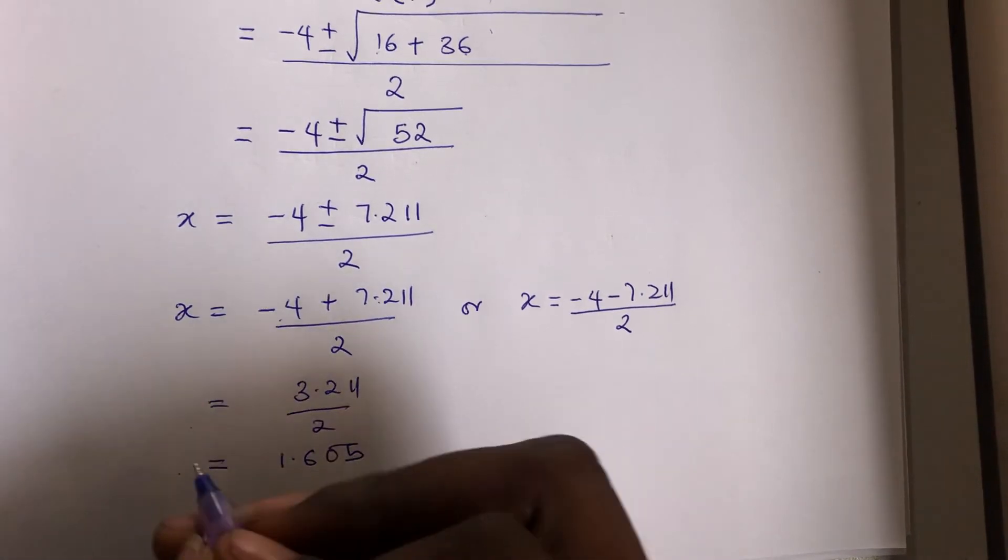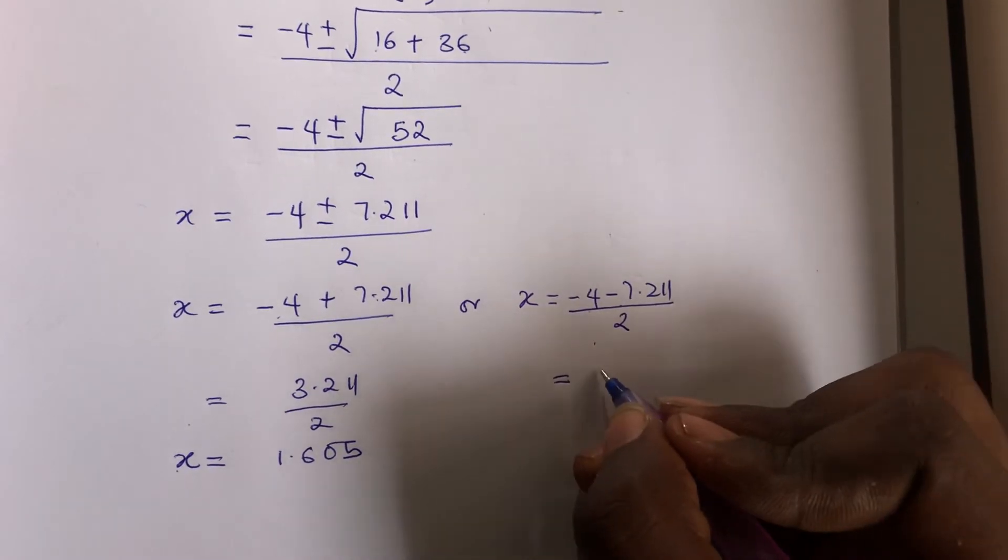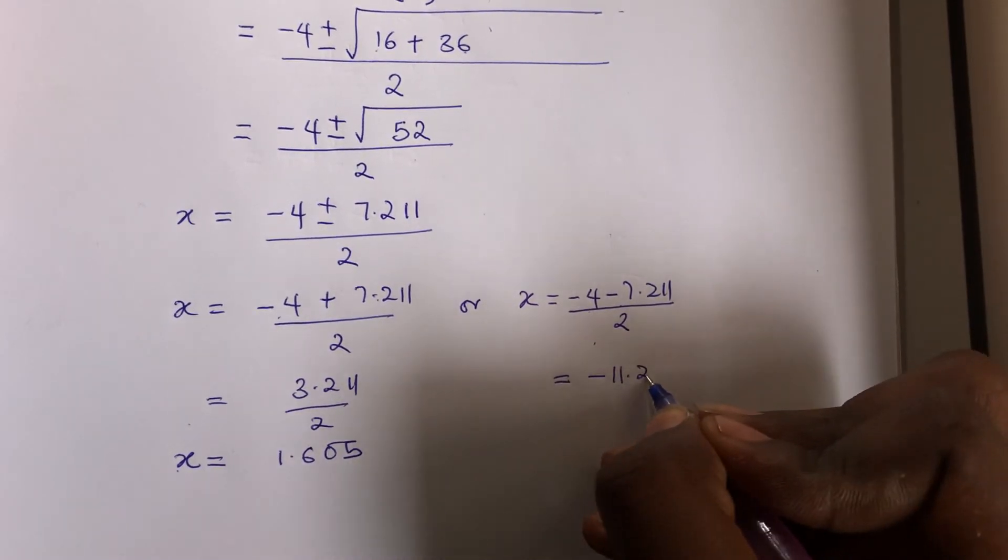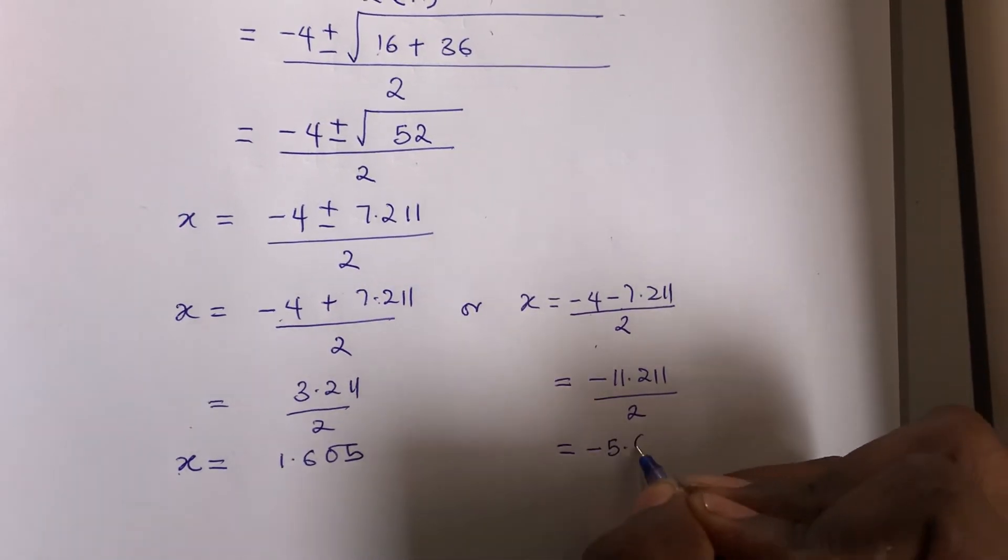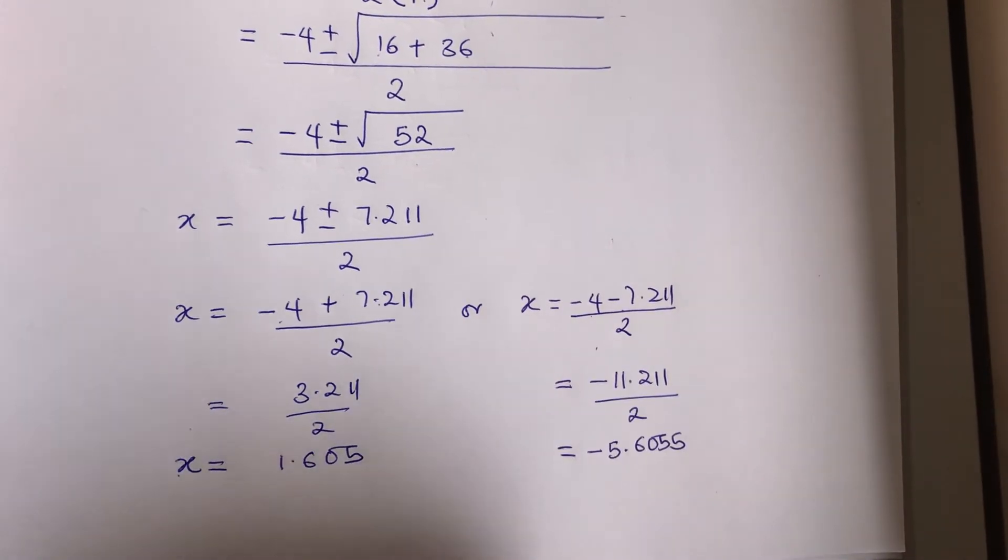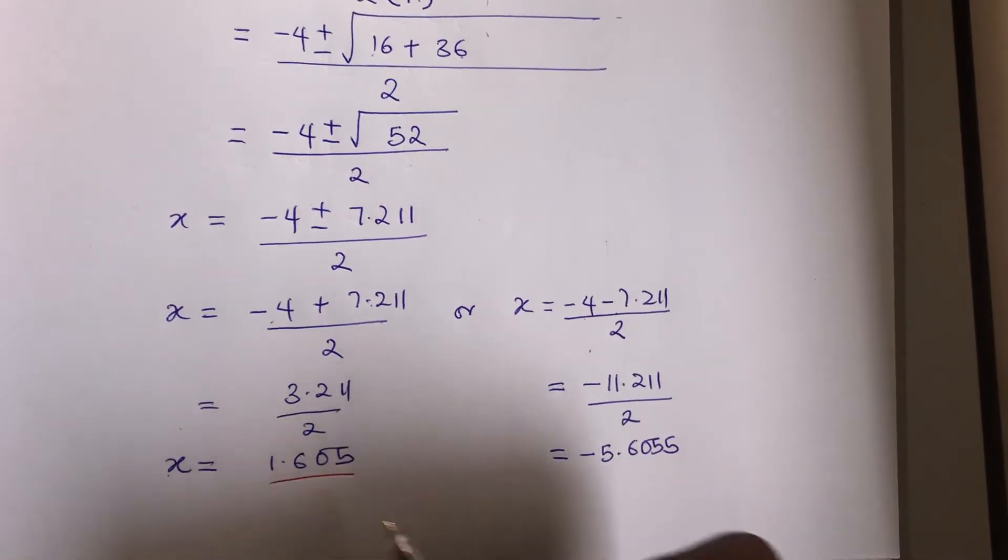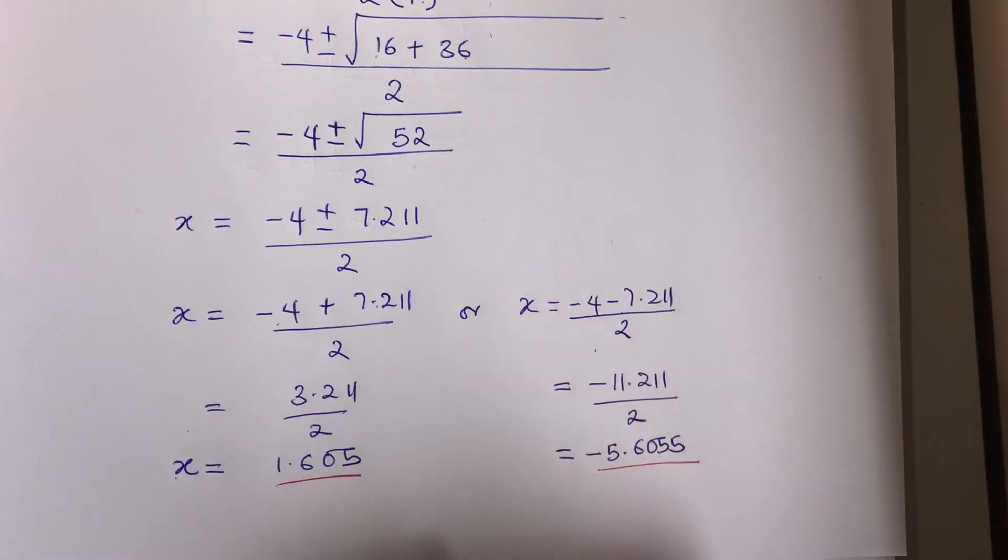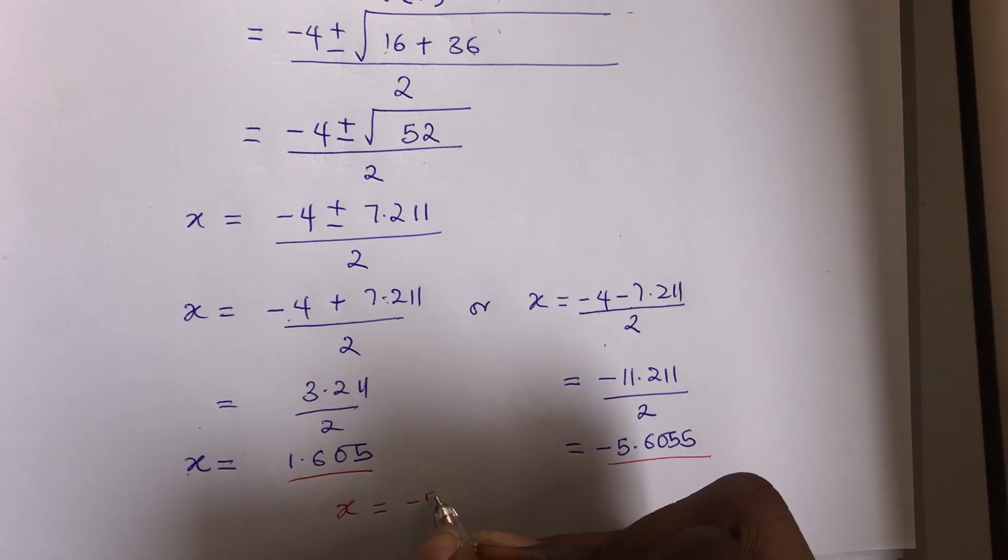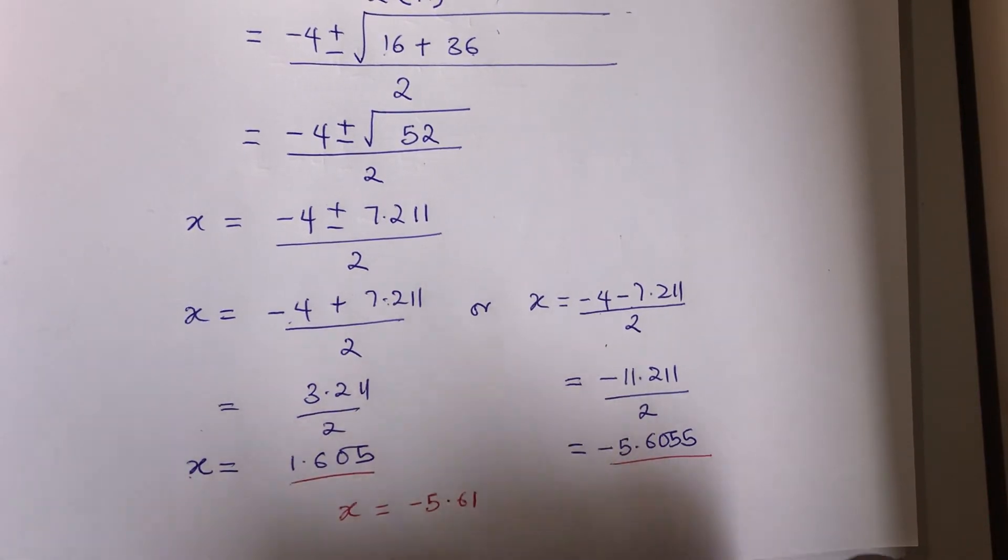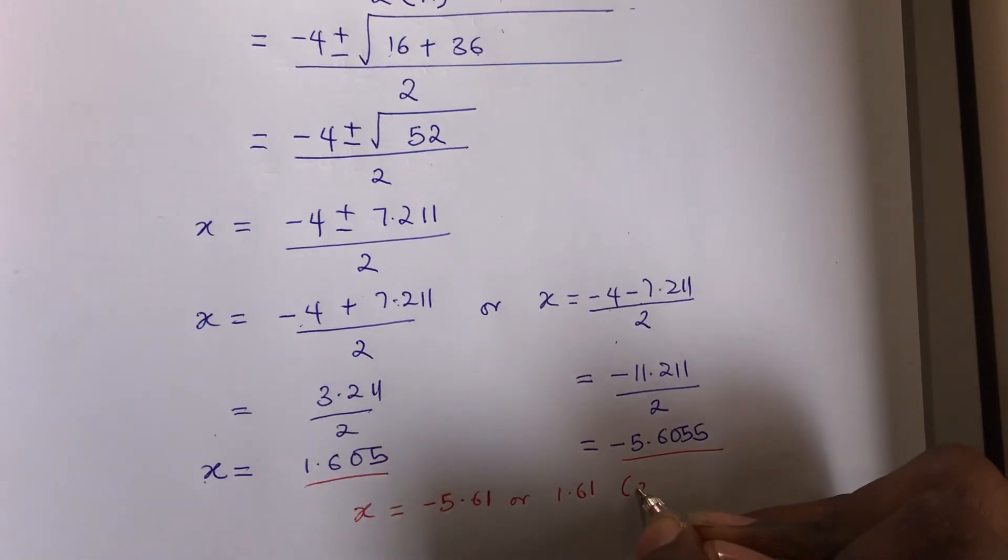So minus 4 minus 7.211 over 2. If you divide this with a calculator, you're going to get this. These are your answers here. The value of x is this, and the value of x is also this. So x has two values: x is minus 5.61 or 1.61, that is to two decimal places.